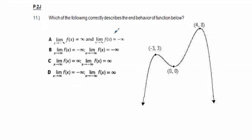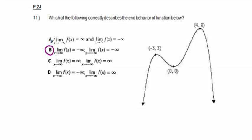Problem 11: which correctly describes the end behavior of the function shown? The end behavior goes from negative infinity to negative infinity. Looking at the answer choices for limits both toward +∞ and -∞ both being -∞, answer choice B is correct — that should have been an easy one.